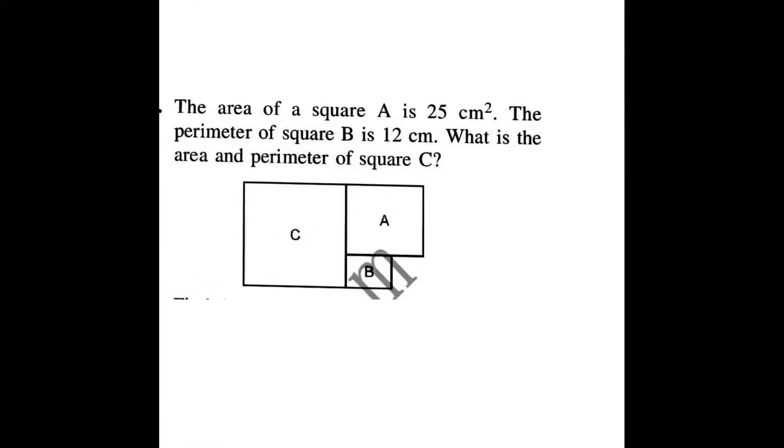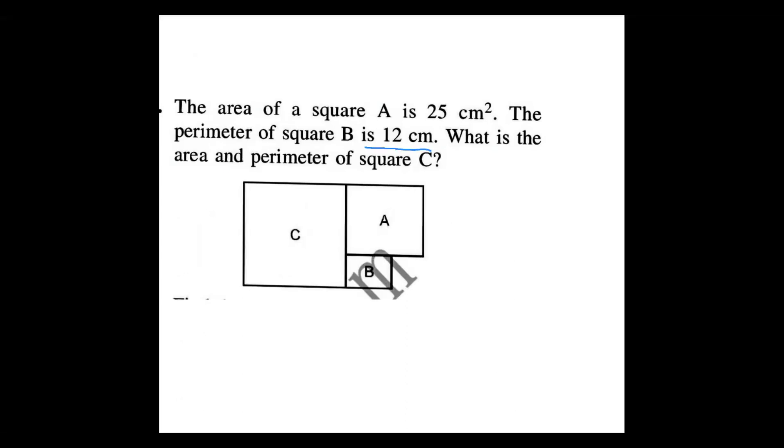Here, the area of square A is 25 cm square. The perimeter of square B is 12 cm. What is the area and perimeter of square C? These are three squares, the combination of three squares. But they gave only A and B to us.